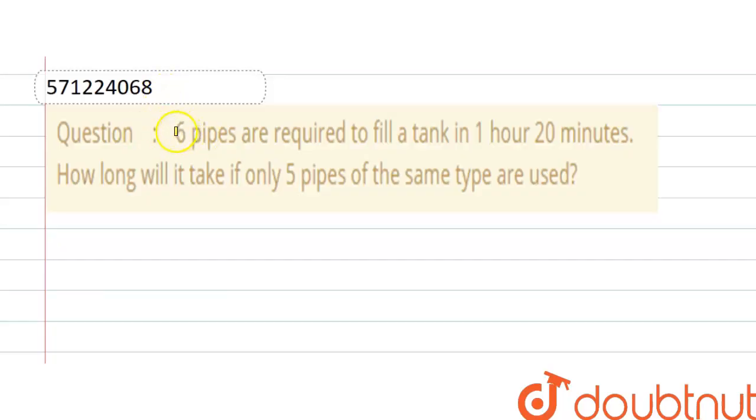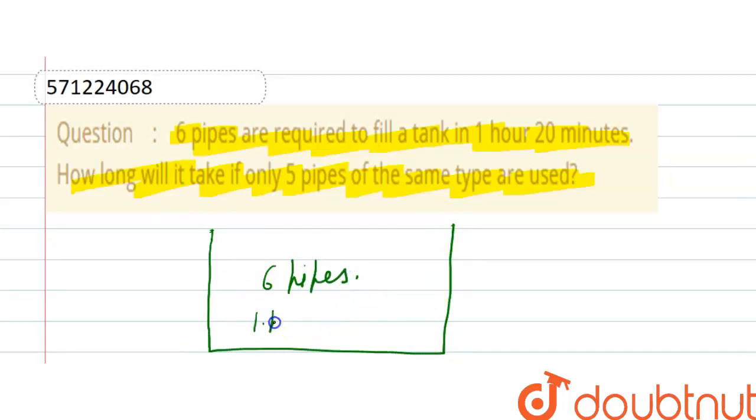Hello guys, the question is 6 pipes are required to fill a tank in 1 hour and 20 minutes. How long will it take if only 5 pipes of the same type are used? Now there is a tank and it has 6 pipes and it fills the tank in 1 hour and 20 minutes.